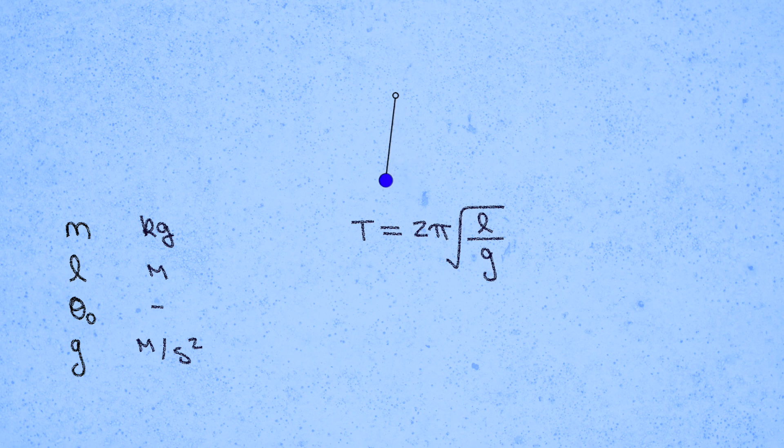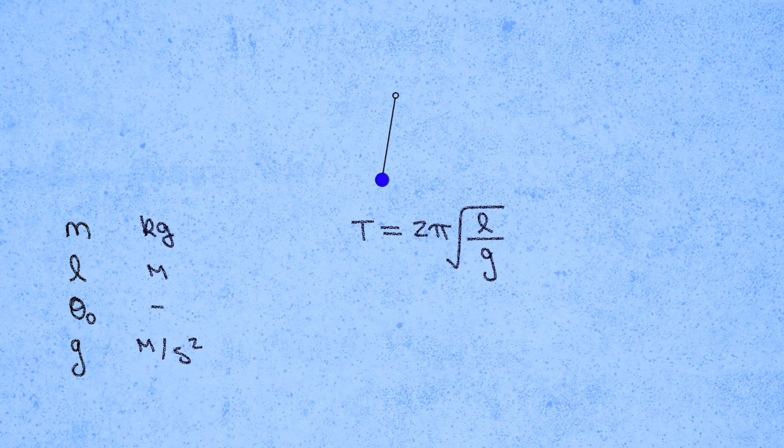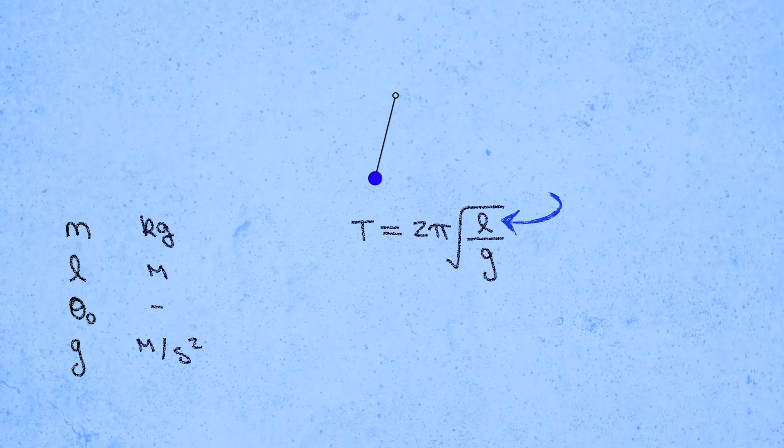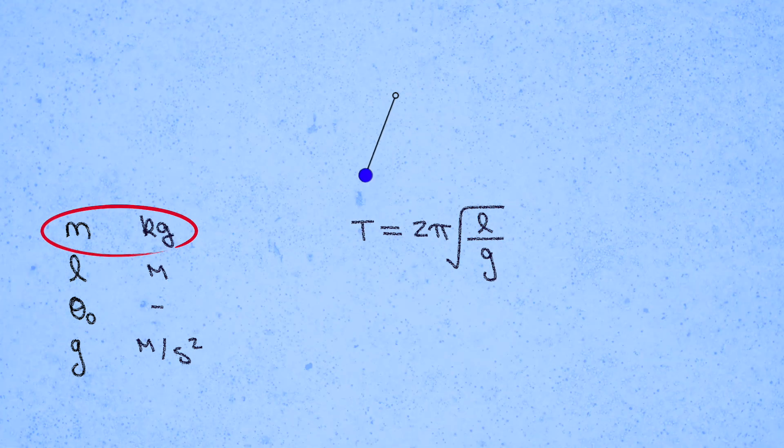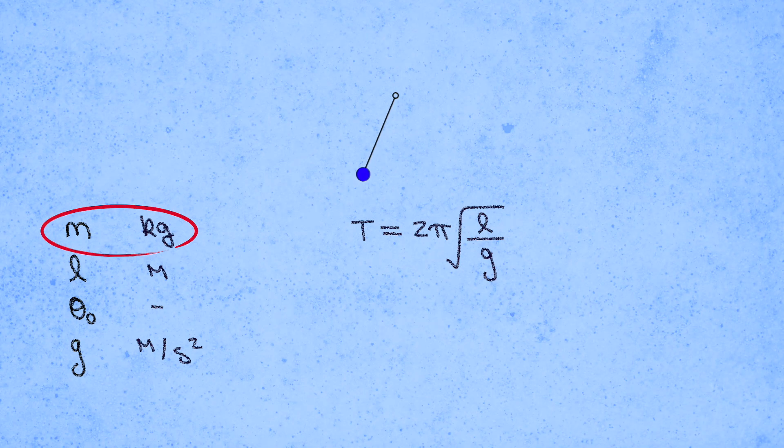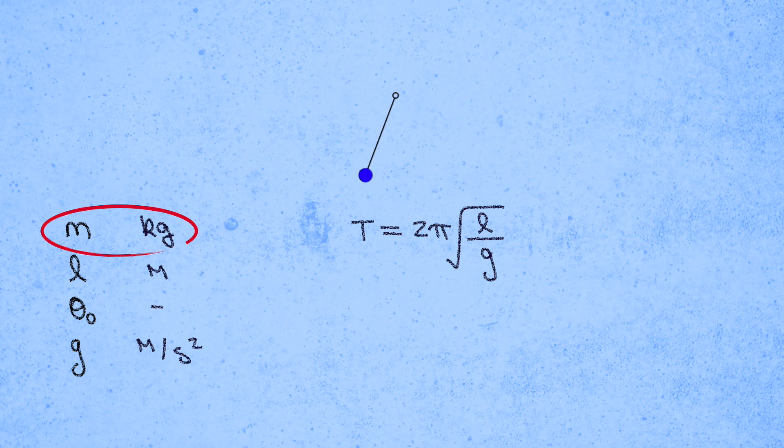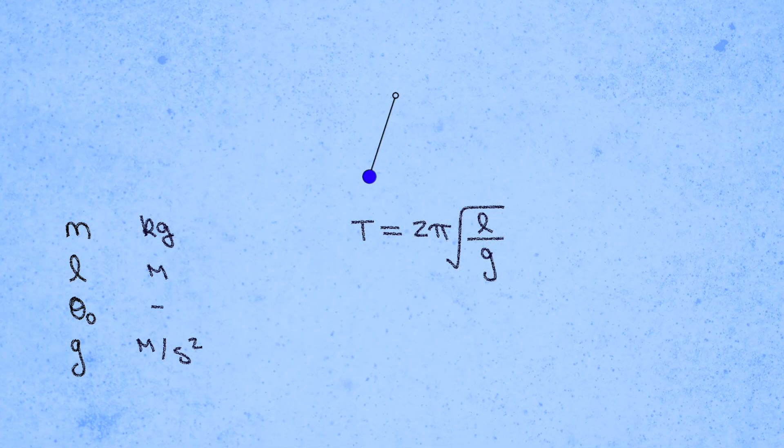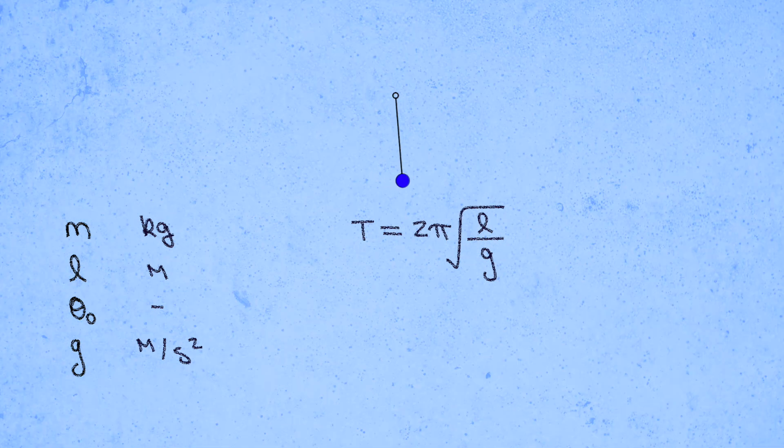Still, the units tell us a lot with minimal effort, like the fact that the oscillations of the pendulum get slower and slower the longer you make the rod, and moreover that the period cannot depend on the mass of the particle. M can't appear in this formula because we don't have another parameter handy with which to cancel out those units of kilograms. Two pendulums of the same length, one with mass 1 kilogram and the other with mass 2 kilograms, will oscillate at the same rate.